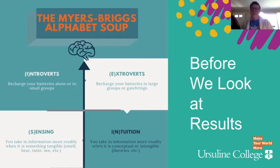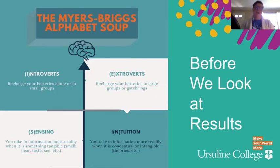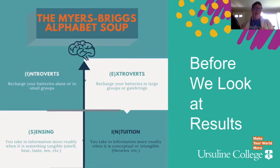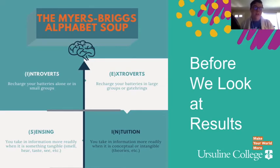Next is sensing versus intuition. This is about how you absorb information. Do you rely on something tangible — all of your senses, something that has to be heard, tasted, or seen? Sensing people might prefer a more hands-on classroom experience. Intuition people, like myself, like to deal with abstract concepts and ideas. There is nothing wrong with either one — it's just about how you more properly take in information for yourself.